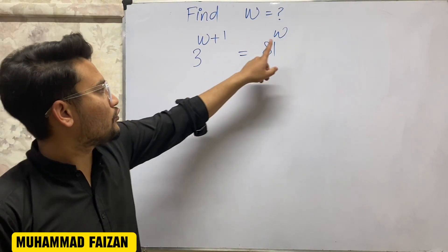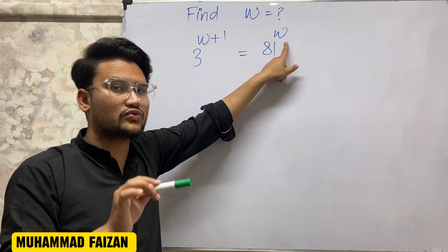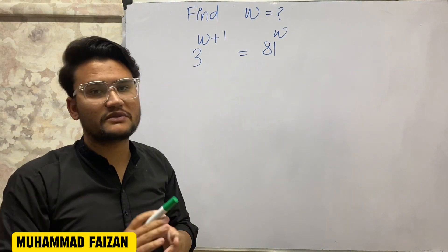So students, we have to find out W. The variable is used as a variable power, and we have two methods of solving the equation.